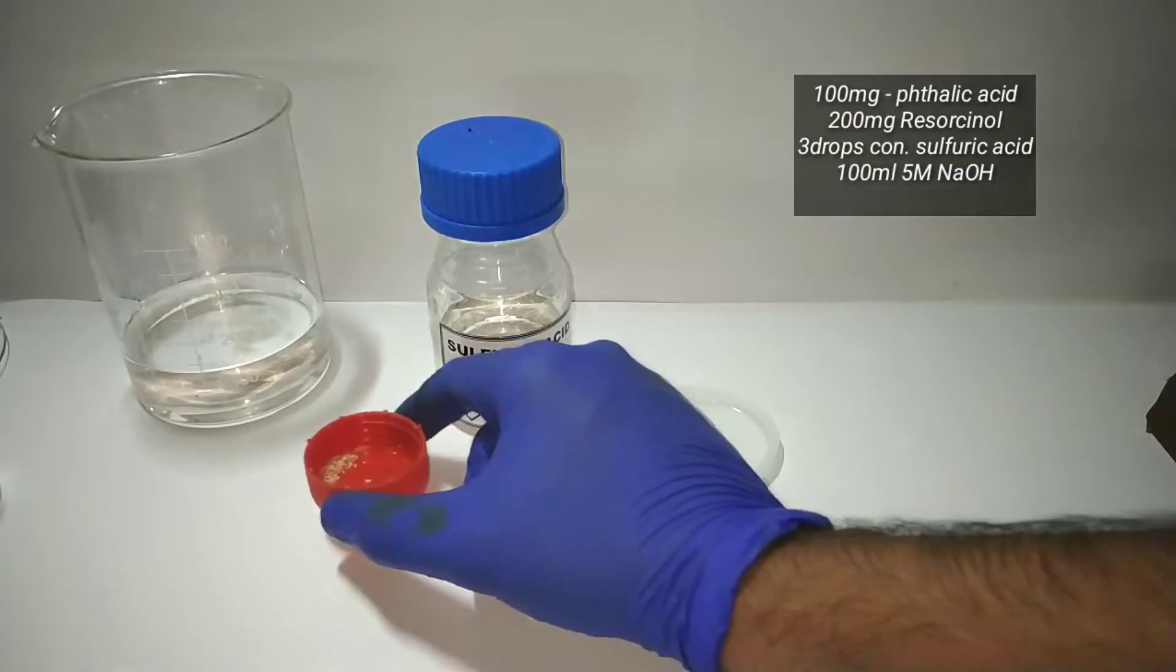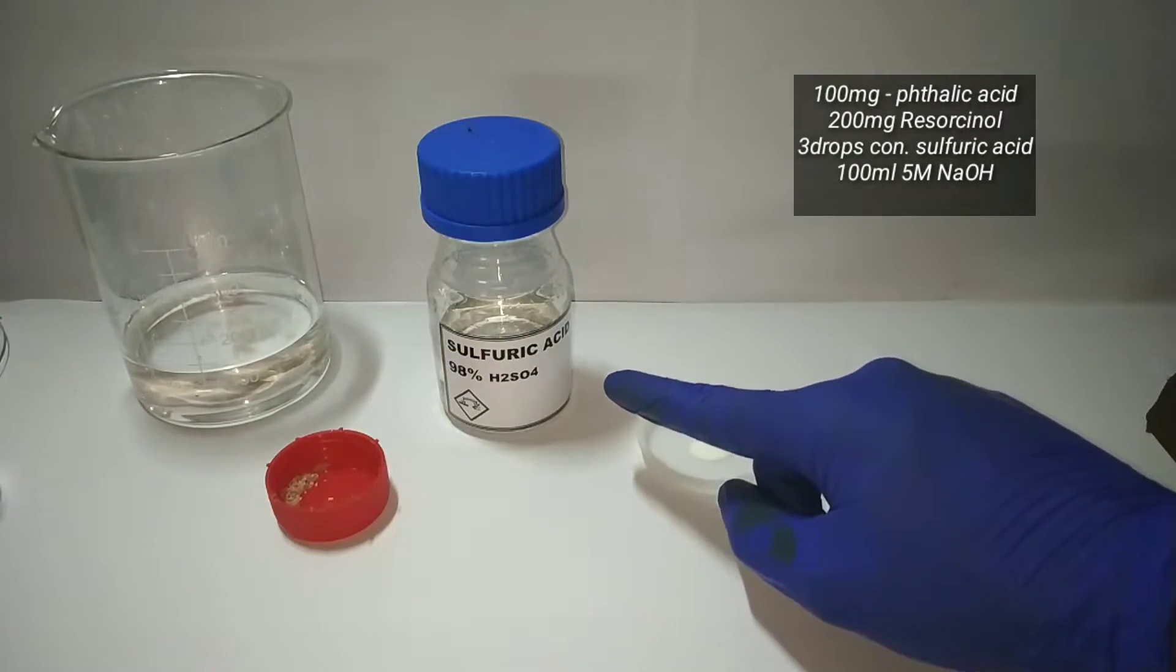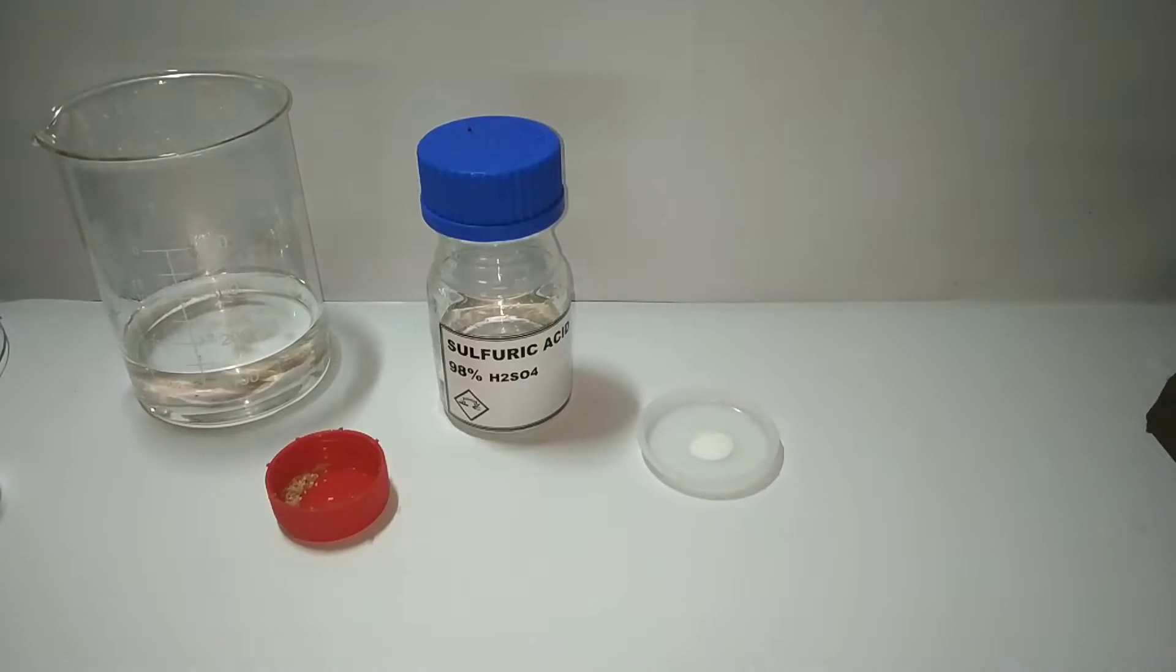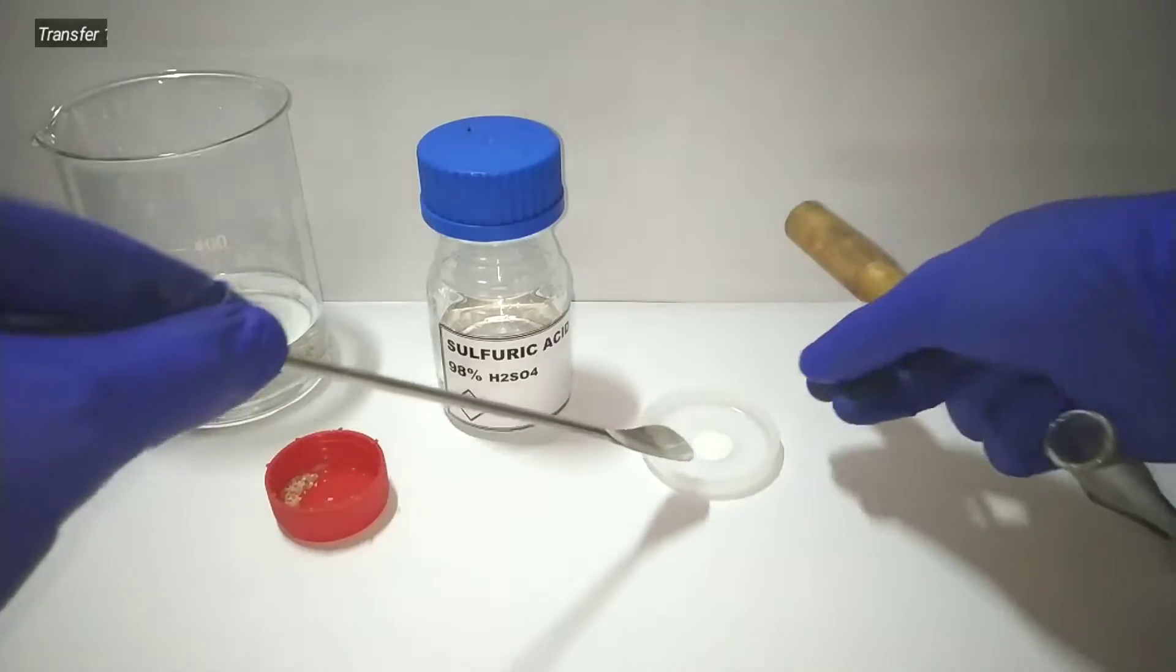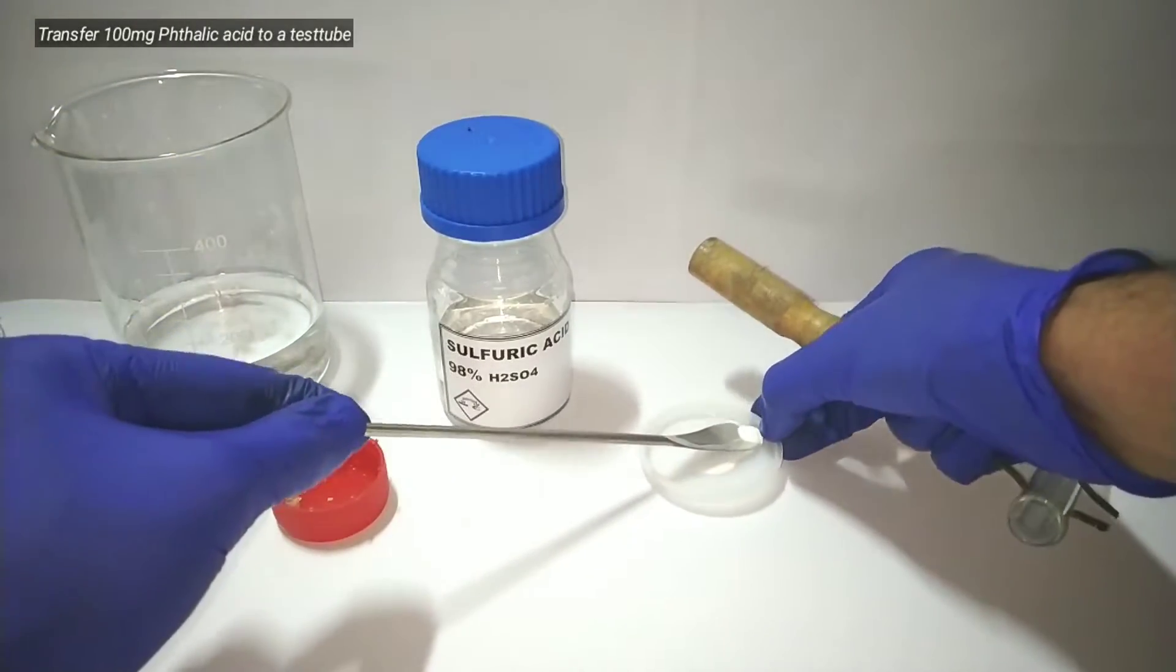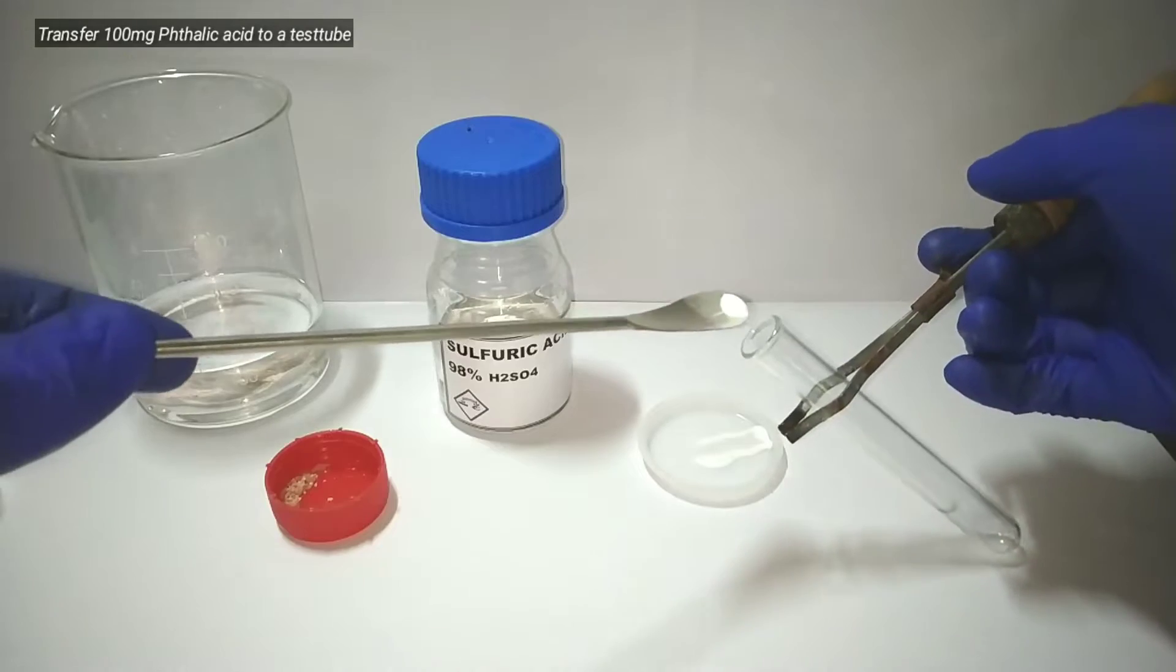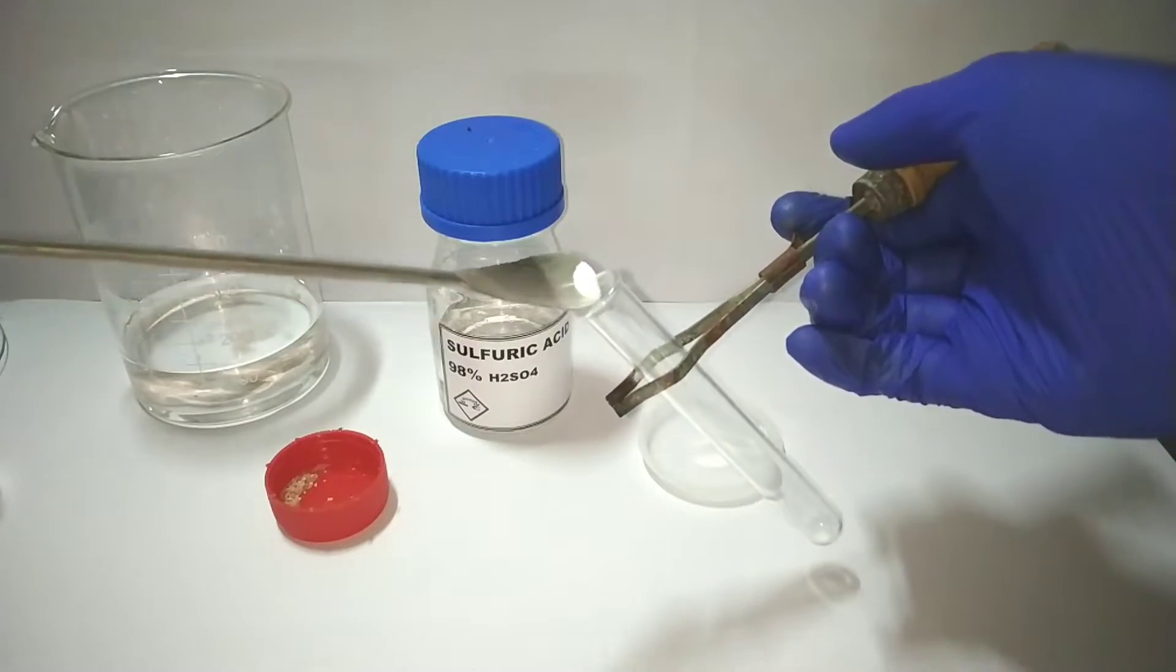We need 100 milligrams of phthalic acid, 200 milligrams of resorcinol, three drops of concentrated sulfuric acid, and 100 milliliters of 5 molar sodium hydroxide. We start by taking a clean and dry test tube and then add 100 milligrams of phthalic acid.